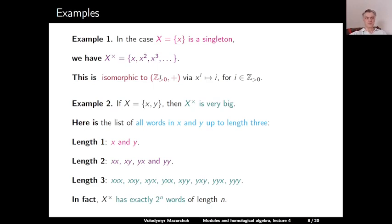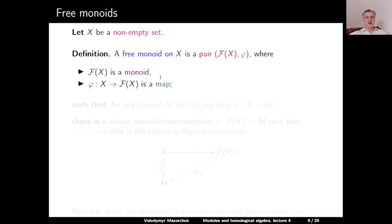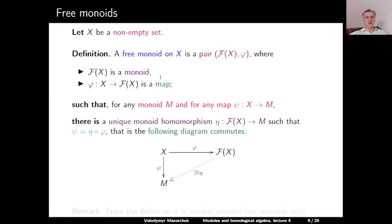Let us now move to the discussion of free monoids. Let X be a non-empty set. A free monoid on X is a pair consisting of the monoid F(X) and a map φ from X to F(X), such that for any monoid M and any map ψ from X to M, there exists a unique monoid homomorphism η from F(X) to M such that ψ equals η after φ. In other words, the following diagram commutes, analogously to the semigroup case.